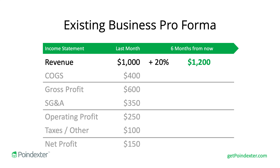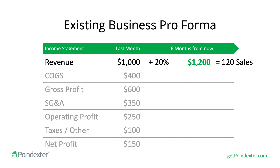The thing is, a 20% revenue increase doesn't really tell us what we need to do each day to achieve this goal. So I like to convert the revenue forecast into something more tangible. If we're selling each product for $10, that equates to 120 sales. 120 sales is a lot easier to get our heads around — how many customers need to come through the door, how many new leads we need to generate from our marketing channels. It gives us actionable insight into what we need to do to realize that 20% increase, which is simply 20 more customers over six months.